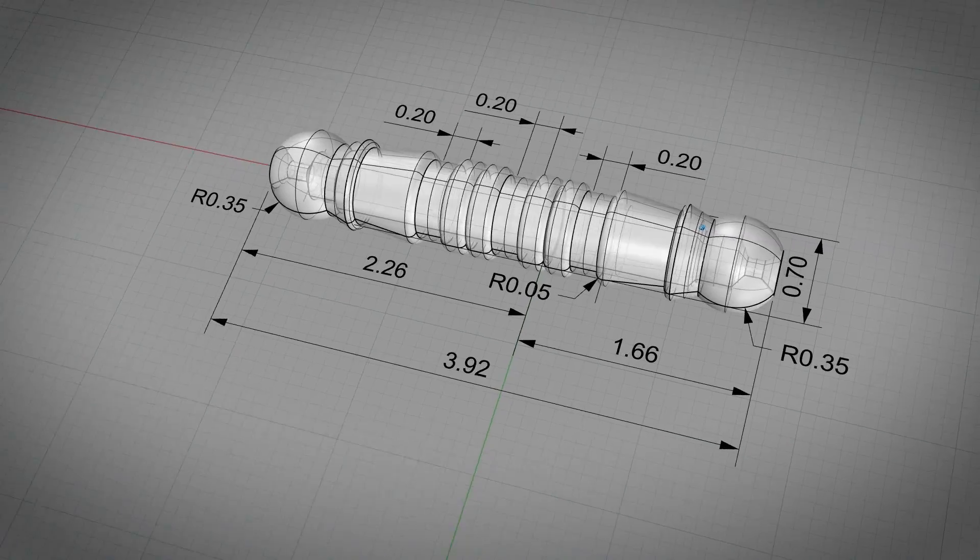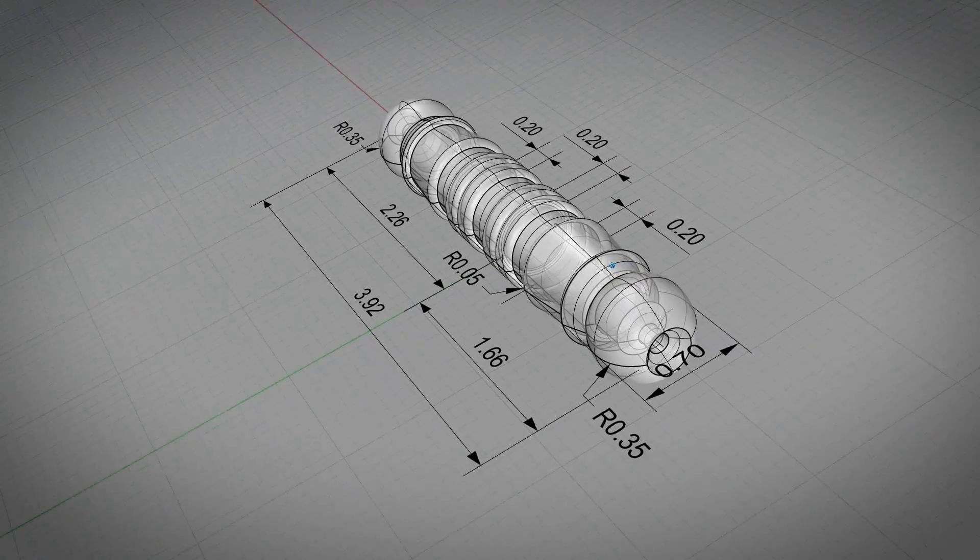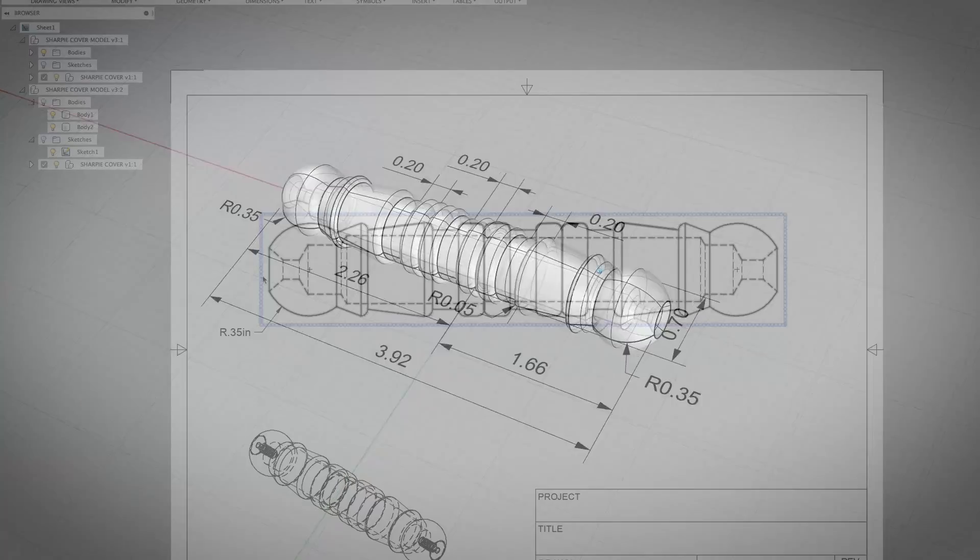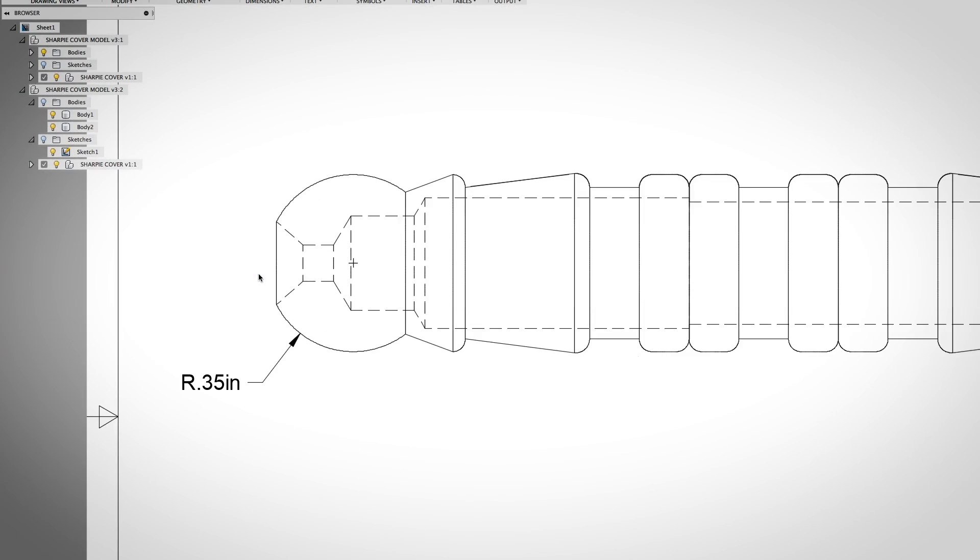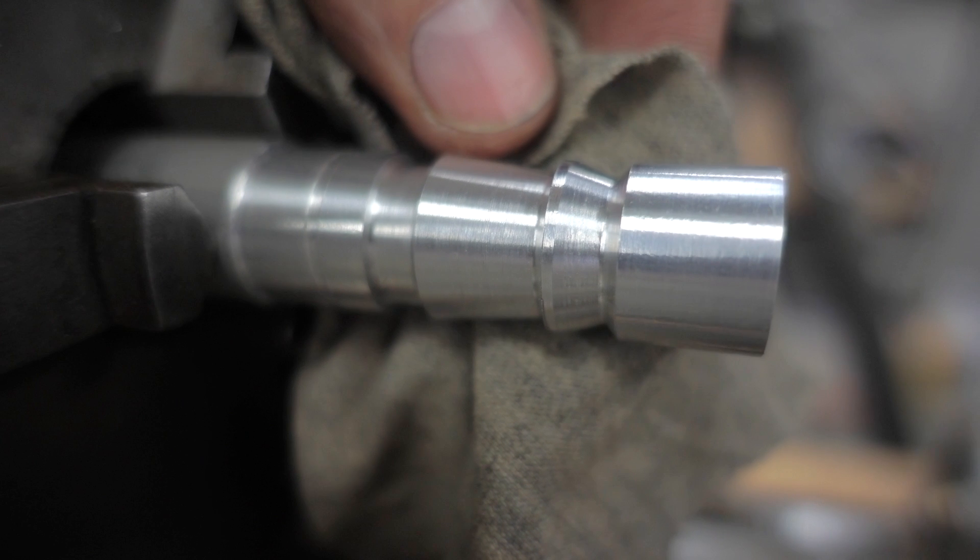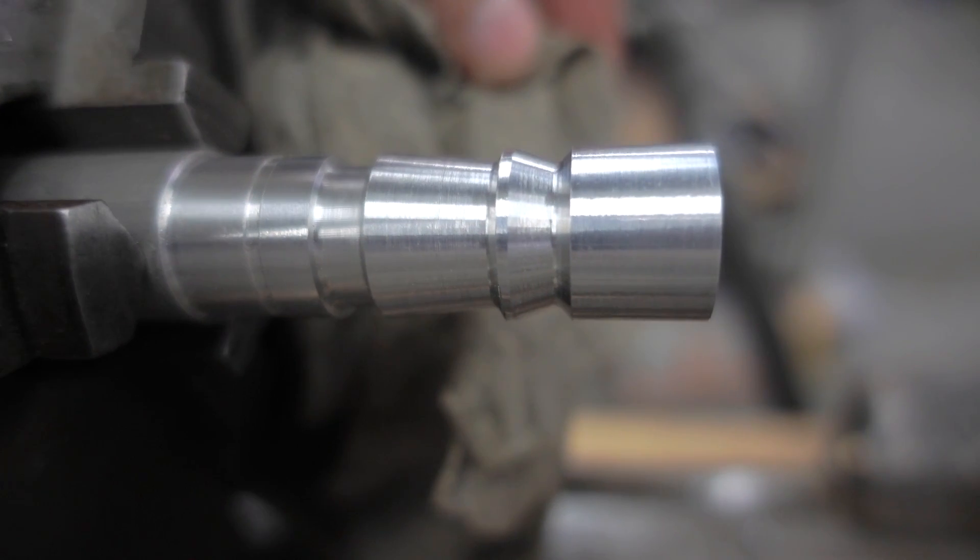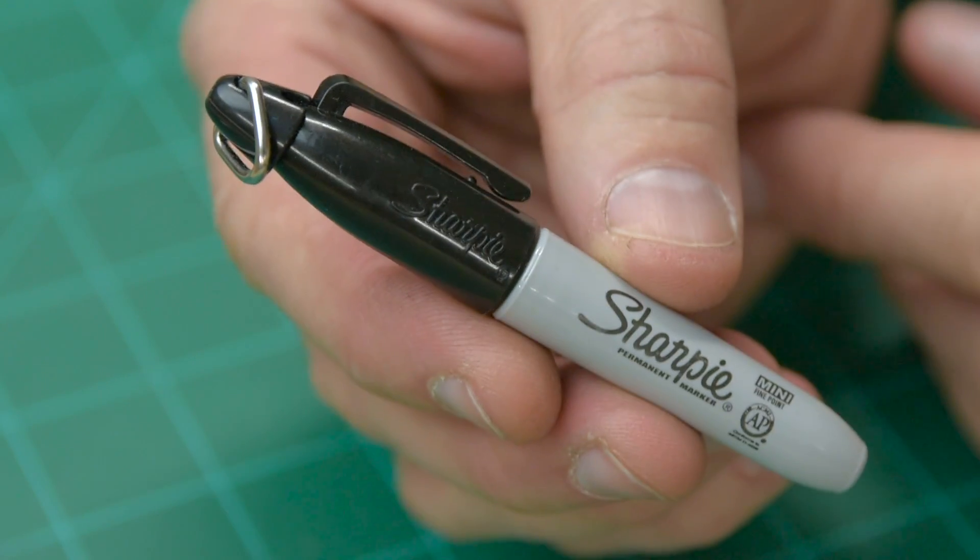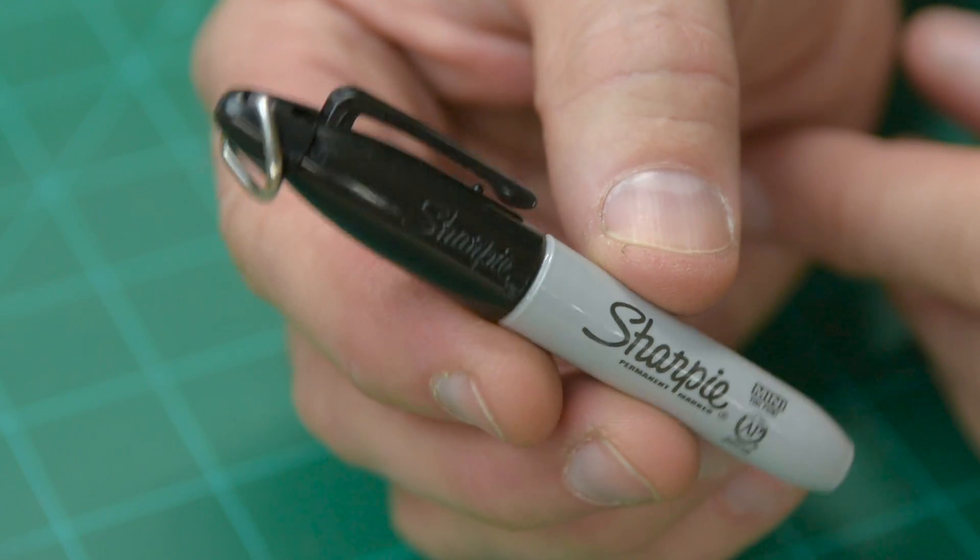Whenever I talk about the creative process, the subject of limitations always comes up. I like to refer to them as design parameters. In this project, I don't have a client or a customer to give me those rules or parameters, so I had to come up with my own. I gave myself a short list of machining operations that I wanted to practice on. The biggest challenge was going to be matching the critical dimensions of this mini Sharpie.